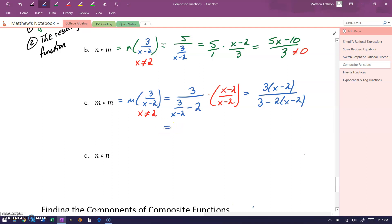And then we'll distribute through to get 3x minus 6 in the numerator. Actually, that should be plus 7 from the 4 plus 3.